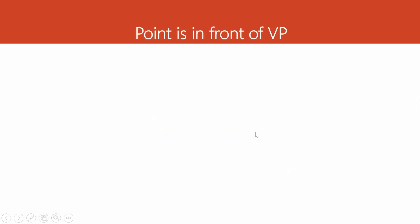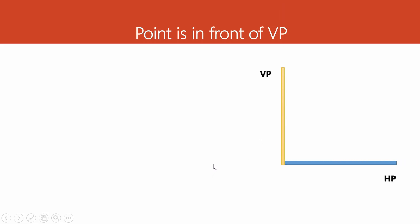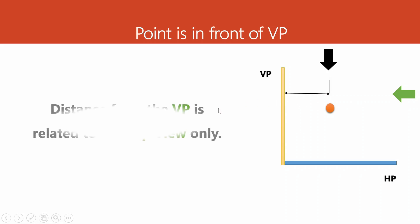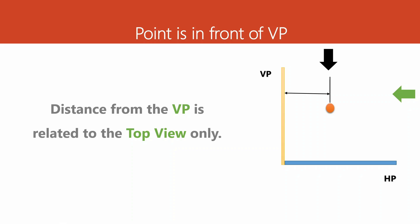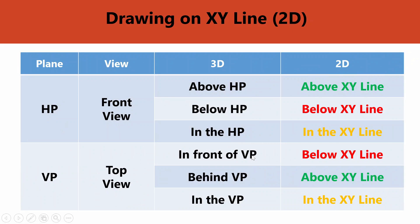The next important point: when the point is in front of VP or behind the VP. Since we are using the first quadrant, we say 'in front of VP.' This distance is visible from the top view only; from the front view it is not visible. So note the second important point: distance from the VP is related to the top view only.